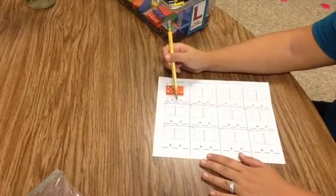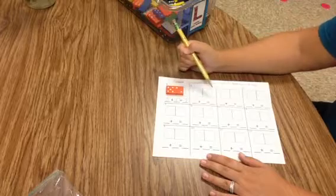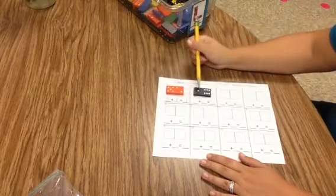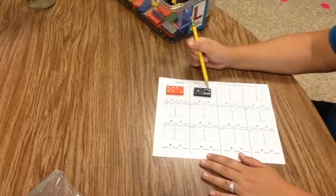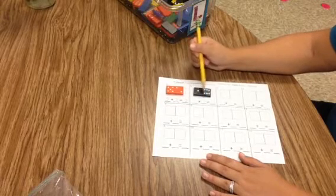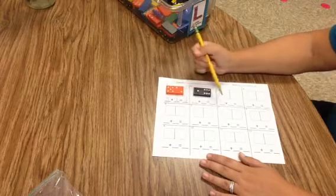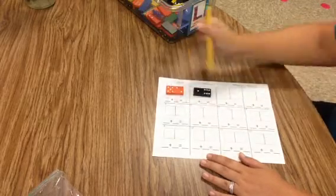So 5 plus 2 equals 7. And they'll do the same thing. They'll pull another one. They're going to find the first part and write it here. The second part and write it here. Count all together to find the whole and create their addition sentences. And they'll do this all through.